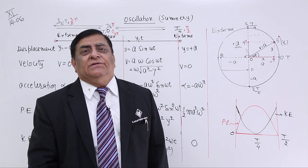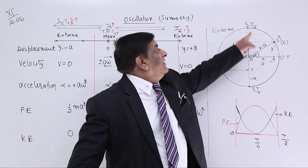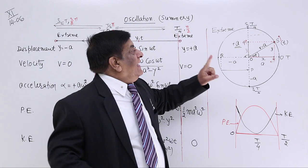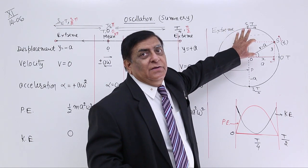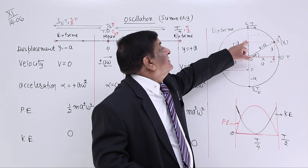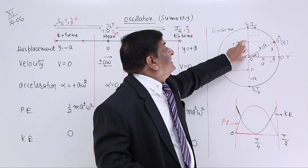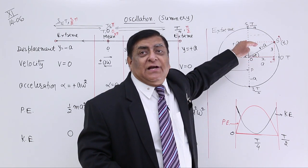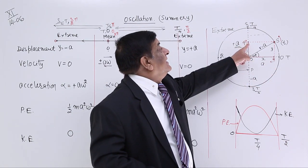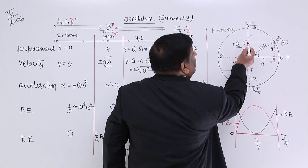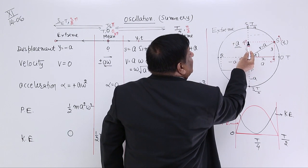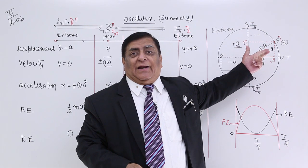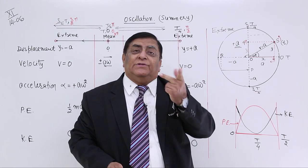One new term I would like to introduce is phase of oscillation. This particle is moving this way. At any time, if we want to point out its position, telling only the displacement does not give us an idea of how much it has covered — whether more than half, less than half, or one fourth. It also does not tell us whether it is going up or coming down, because at a given displacement it can have velocity in both directions.